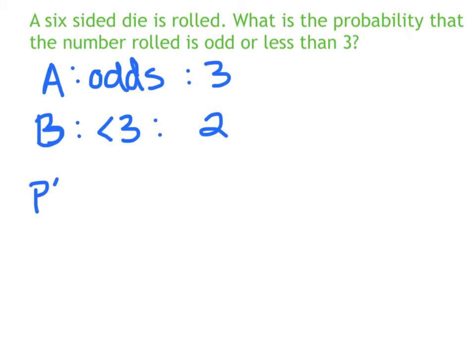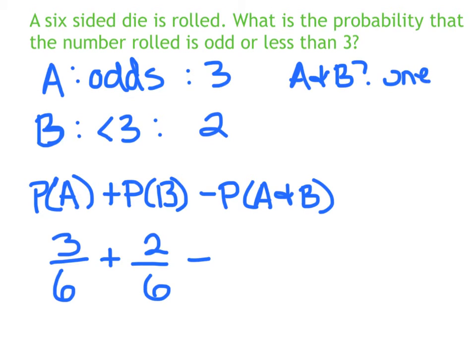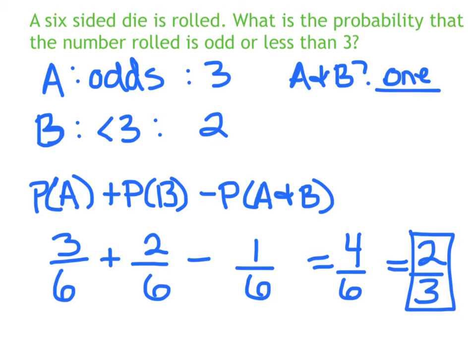So the probability of A is three out of six, because there's six sides to the die. Half of them are odd, plus the probability of B, which is two out of six. Then we have to subtract the probability of A and B. So how many numbers are both A and B? How many numbers are odd that are also less than three? Well, there's one of them. One is the only odd number less than three. So minus one out of six. And when you put those together, three-sixths plus two-sixths minus one-sixths, you get four-sixths, and reduce that fraction. It's two out of three, two-thirds, for a 66.67% chance.